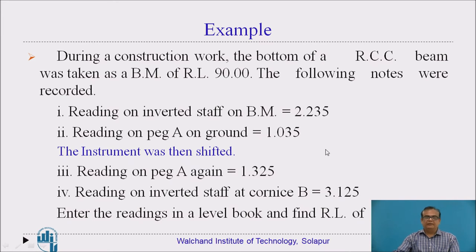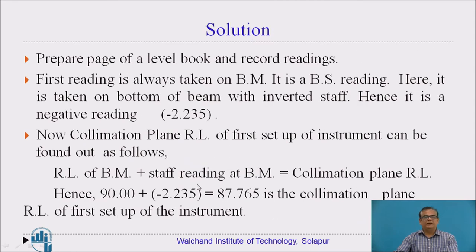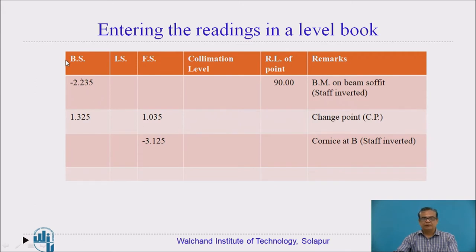Now let us see one example which will make many things clear. During the construction work, the bottom of an RCC beam was taken as a benchmark of RL 90.00, and the following notes were recorded. The first reading is on the benchmark and it is an inverted staff reading. The second reading is on point A on ground, after which the instrument is shifted — this is a change point. Then one more reading is taken on the same staff position from the new instrument position as a backsight. The last reading is at cornice B with the staff held inverted. You have to find the RLs of all these points.